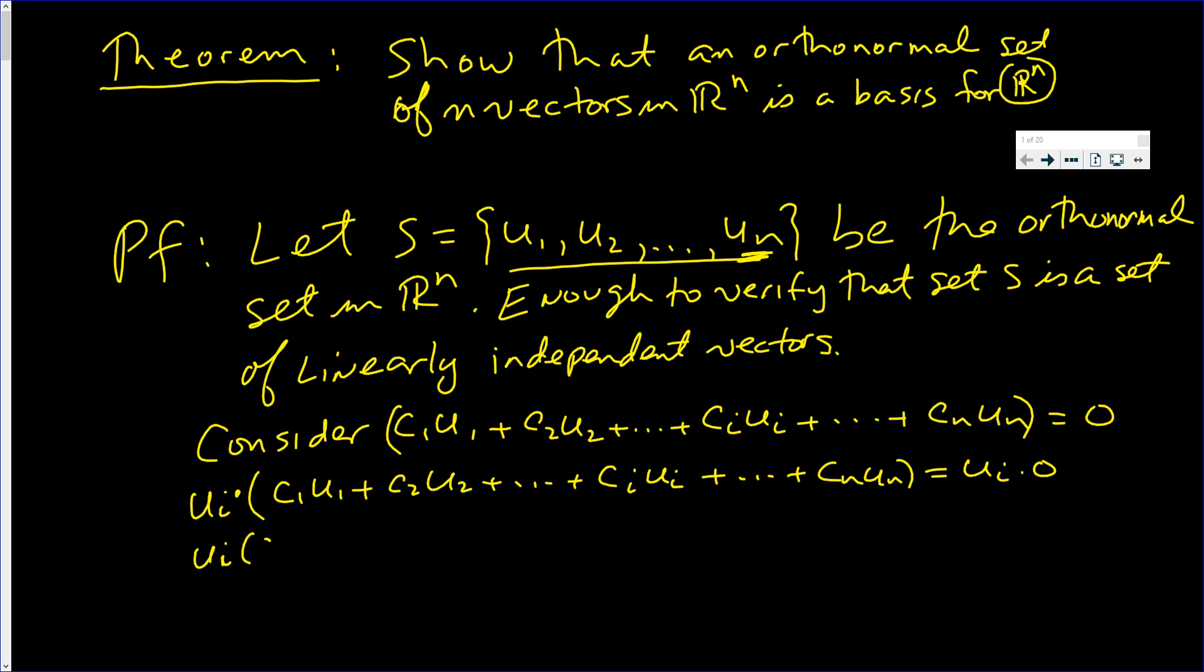u sub i dotted with c1u1 plus u sub i dotted with c2u2, all the way up to u sub i dotted with ciu sub i, all the way up to ui dotted with u sub n, cnun. And this is equal to ui dot zero.